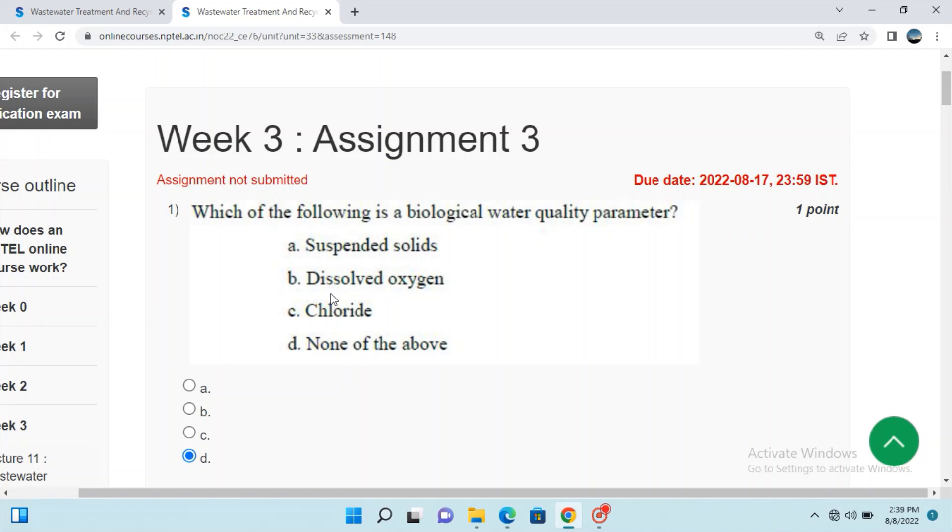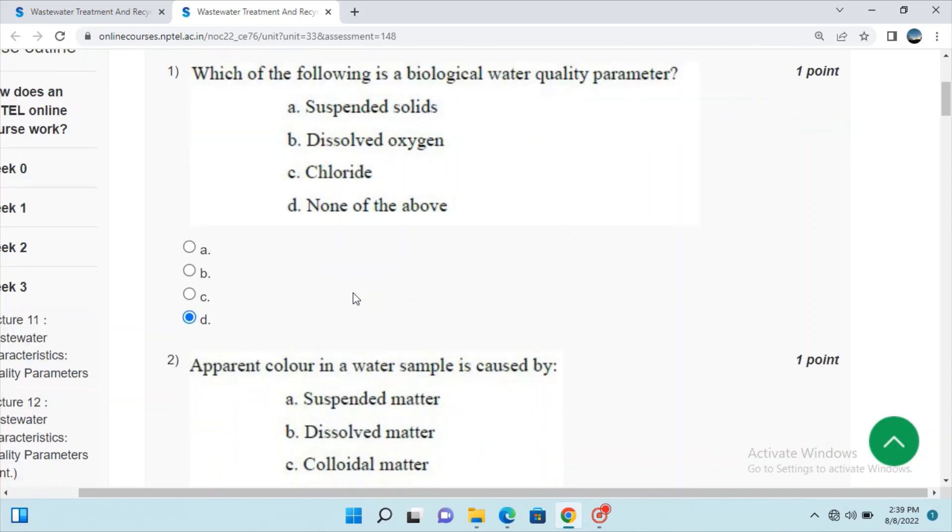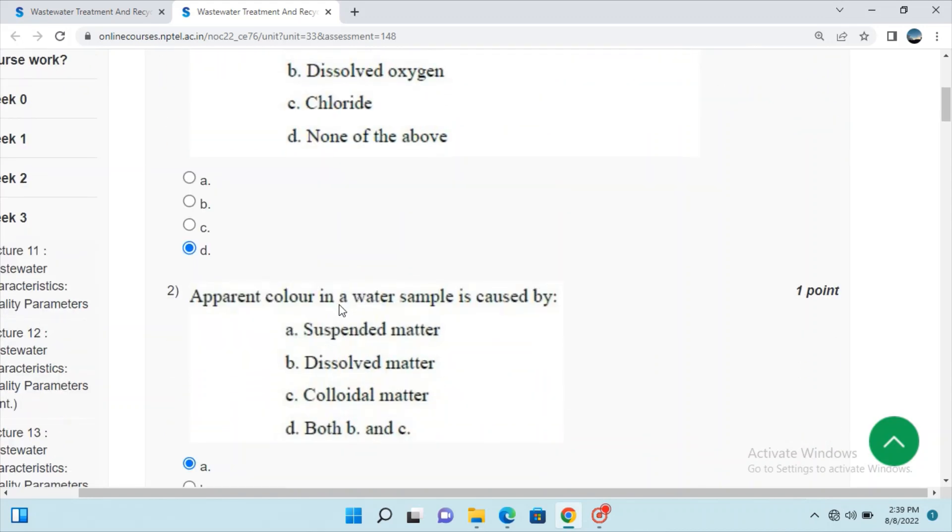Question 1: Which of the following is a biological water quality parameter? Suspended solid, dissolved oxygen, chloride, or none of the above? Option D is correct, none of the above. Question 2: Apparent color in a water sample is caused by suspended matter, dissolved matter, colloidal matter, or both B and C?